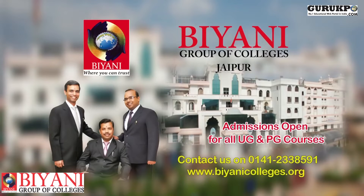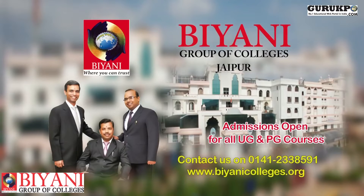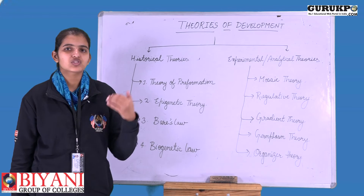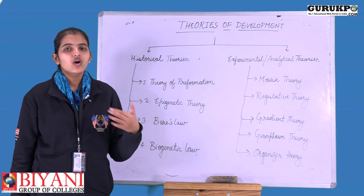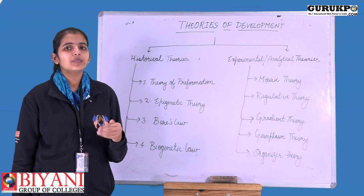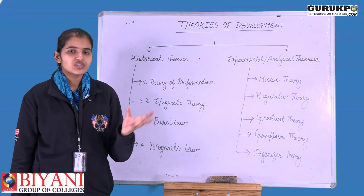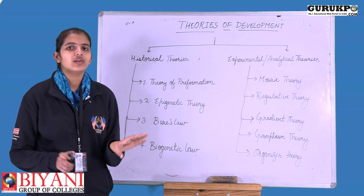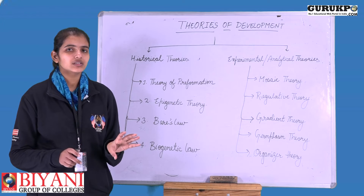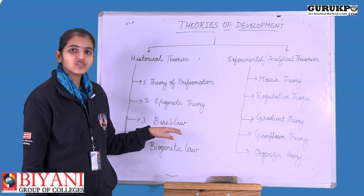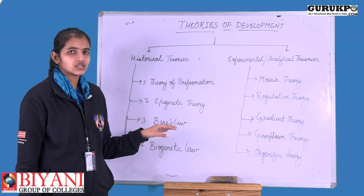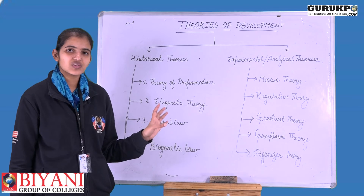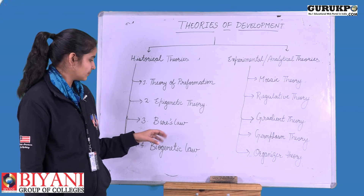First the general characters, such as the vertebral column, develop during early stages of the zygote. Specific characters — such as the brain, eyes, or eye color — develop later. So general characters of the group appear first, and species-specific characters appear subsequently during development.